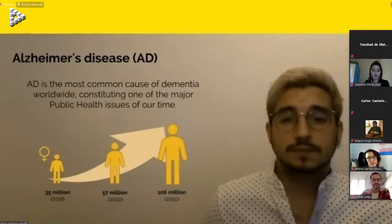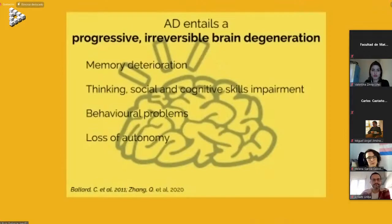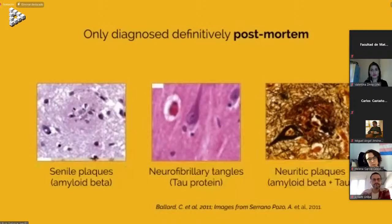Inside the brain of an Alzheimer's disease patient, we find progressive and irreversible degeneration that causes memory deterioration, impairment of cognitive and social skills, and behavioral problems — all leading to a loss of autonomy. The only way to definitively diagnose Alzheimer's disease is post-mortem: when we find senile plaques composed of amyloid beta and neurofibrillary tangles composed of tau protein.